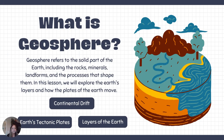So first things first, what is the geosphere? The geosphere refers to the solid part of Earth — this is what you are standing on. All the rocks, the minerals, the landforms, and the processes that shape those things. Throughout this lecture and the next one, we're going to talk about continental drift, the layers of the Earth, and Earth's tectonic plates. We're going to take it slow and go through each of the theories first before we really dive into what plate tectonics is, which is the big unifying theory here.